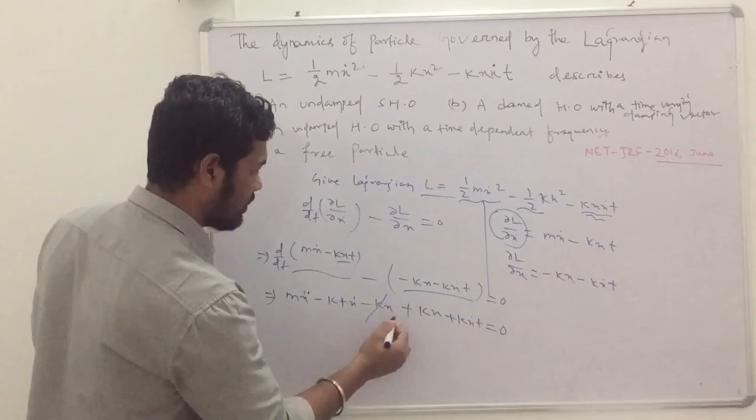So, from this term minus kx dot you will get two terms minus kt x dot minus kx and this will from this you will get multiplied by minus in these two terms you will get plus kx plus kx dot t equals to zero. So, you can see here minus kx plus kx get cancelled and minus kx dot t plus kx dot t also get cancelled. So, the remaining part is your mx double dot equals to zero.